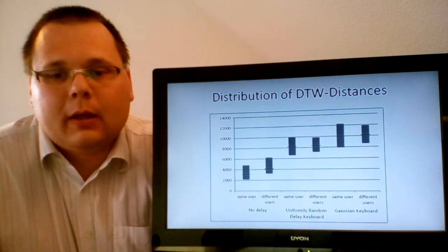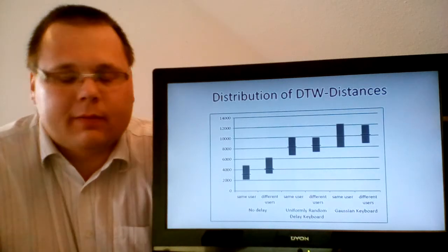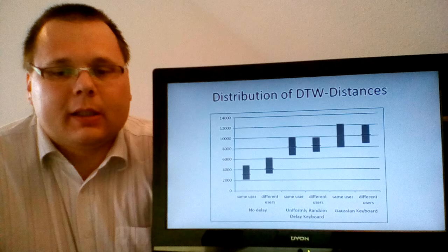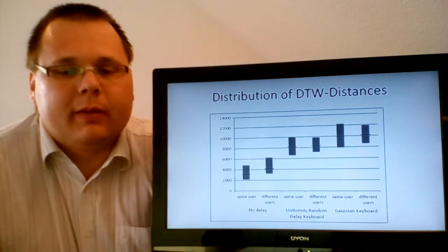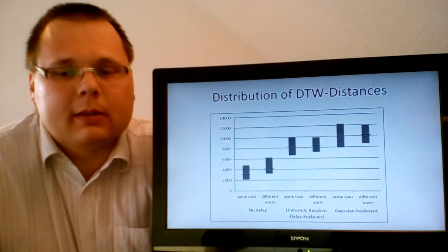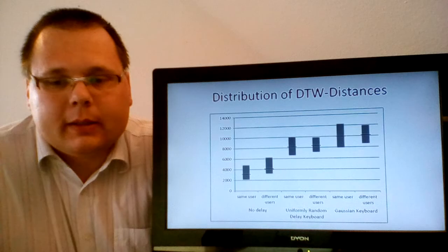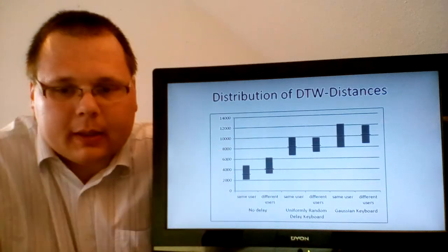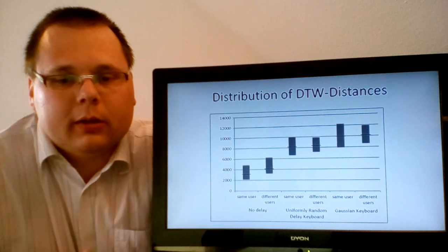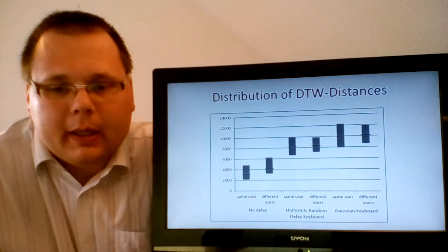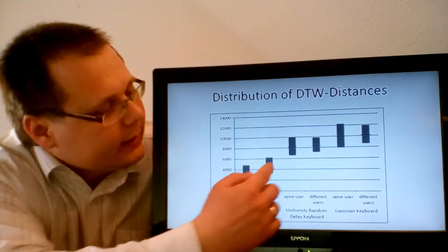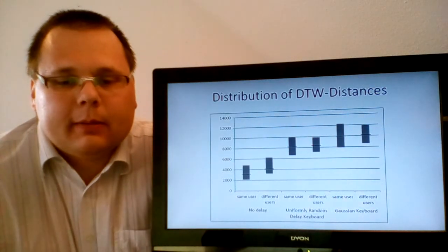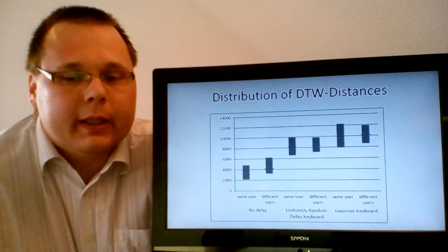And, therefore, instead of repeating the previous experiments with another classifier, we consider the distances between typing patterns of the same user and the distances between the typing patterns of different users. And this is what is shown in this diagram. Although, already in case of a standard keyboard, that is, in the case when there is no delay, the ranges of these distances overlap, it is important to note that the overlap remarkably increases in case of the privacy-aware keyboard models. And this indicates that privacy-aware keyboards make personal identification really difficult.